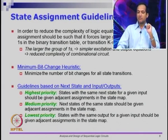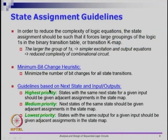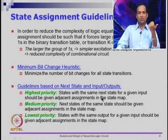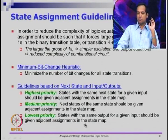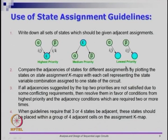If we use what is called a bit change heuristic, we are going to look at the states and force large groupings of logic 1s. We know from K-maps that if you have ones that are closer to each other, you can group them and reduce the number of gates — we will try something very similar with states. We will have a set of guidelines based on the next state and the inputs and outputs. The highest priority is given to states with the same next state for a given input, which should be given adjacent assignments in the state map.